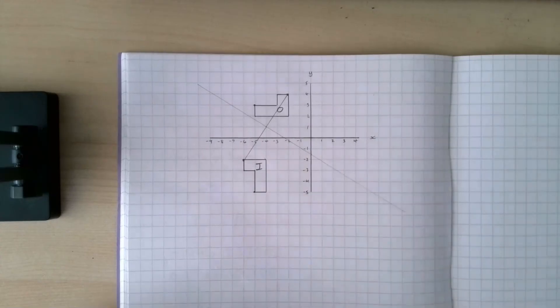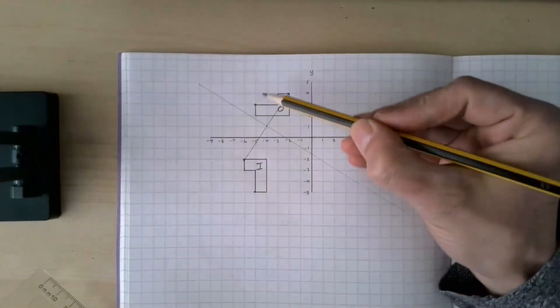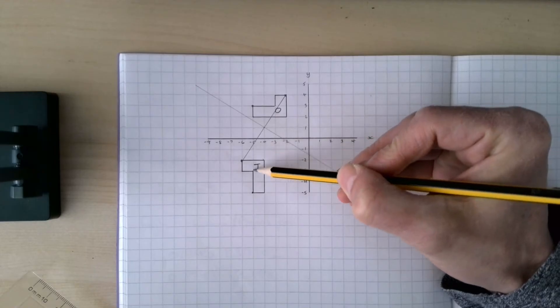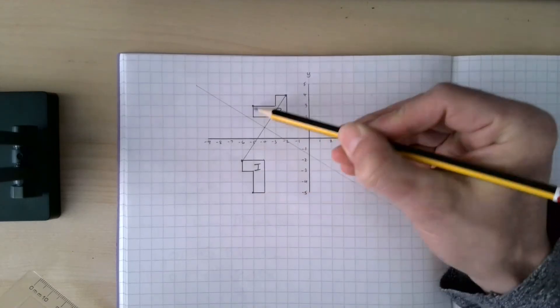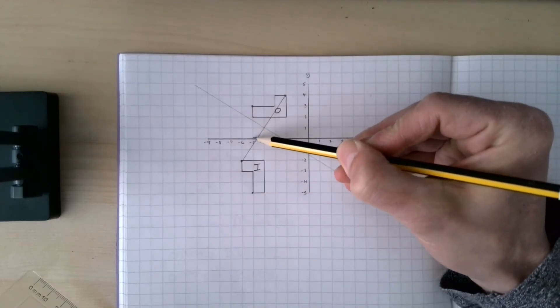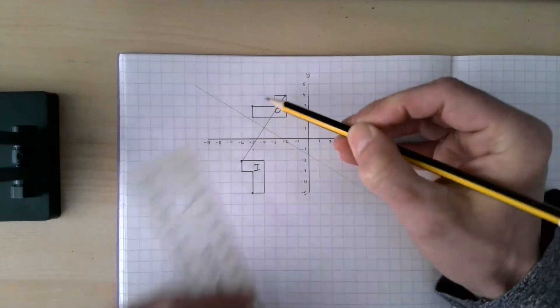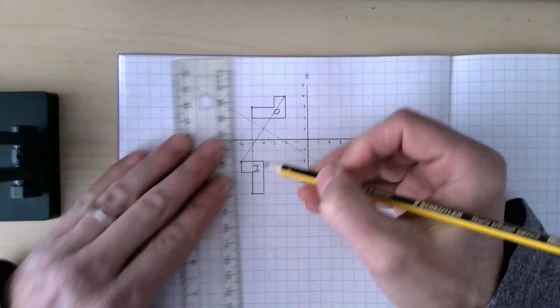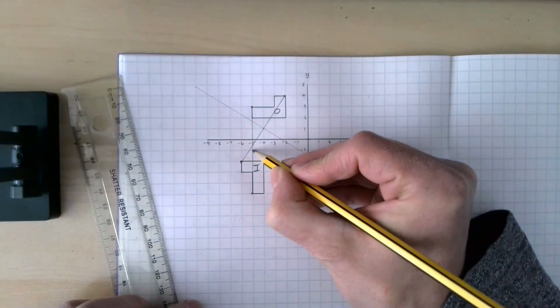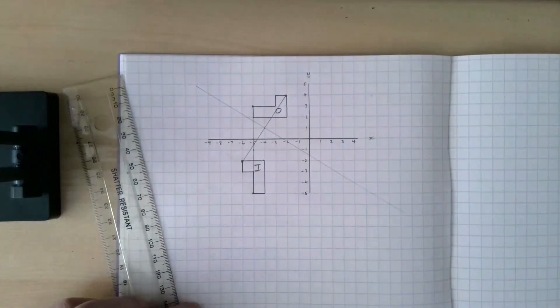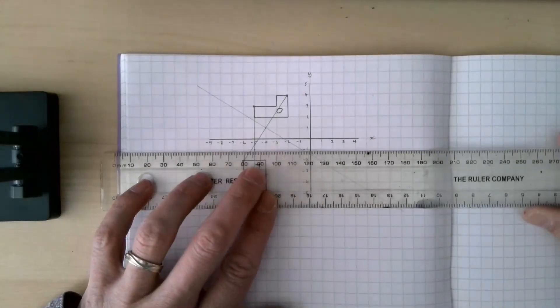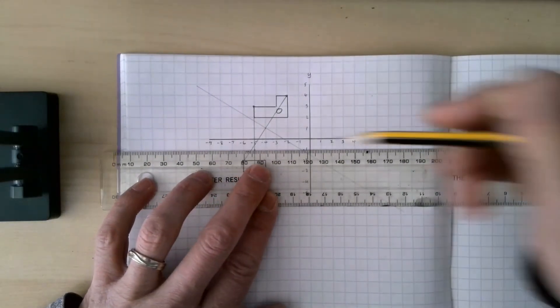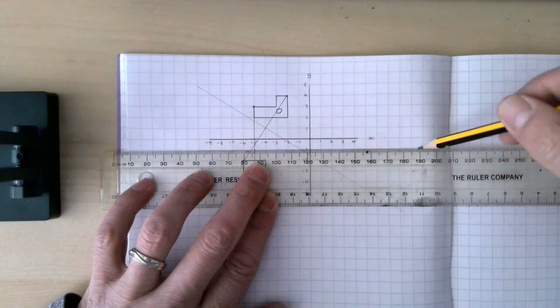If I measure those two, I can see how many squares is that? One, two, three, four, five, six, seven, eight squares. So halfway will be one, two, three, four there. Draw the line joining that point there, that's halfway between. Let's do a perpendicular line with that going through there.